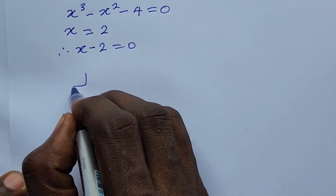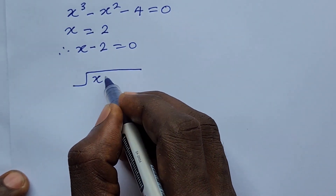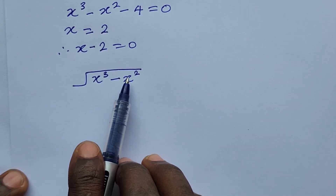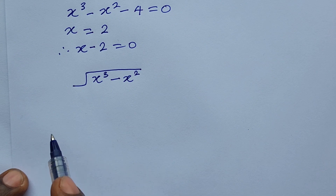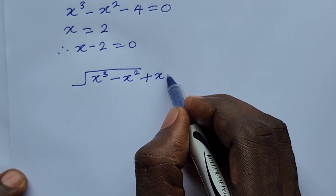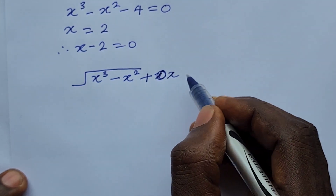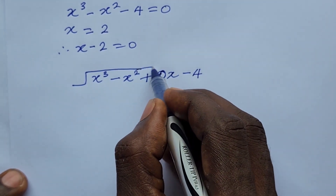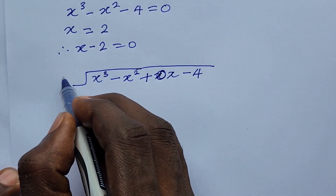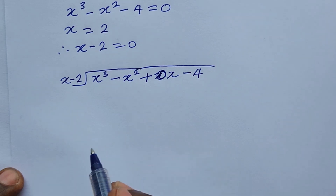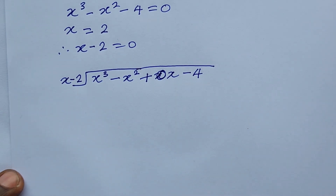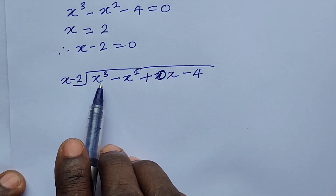So we divide: we have x to the power of 3 minus x squared. We don't have an x to the power of 1 term, so we have to introduce it just to complete the setup — we add plus 0x, then minus 4. This is our dividend. The divisor is x minus 2 on the other side, and we want to solve for our quotient which will be the answer on top.